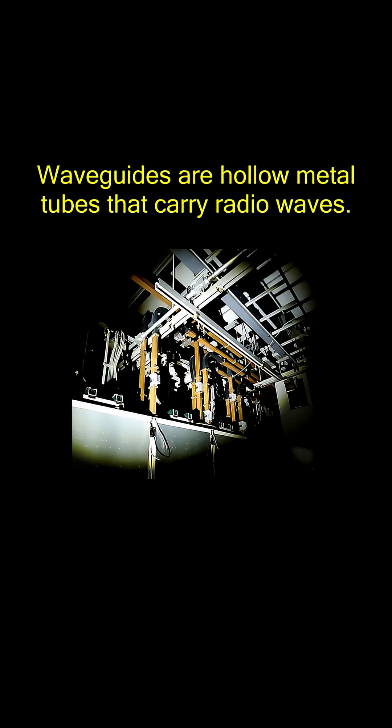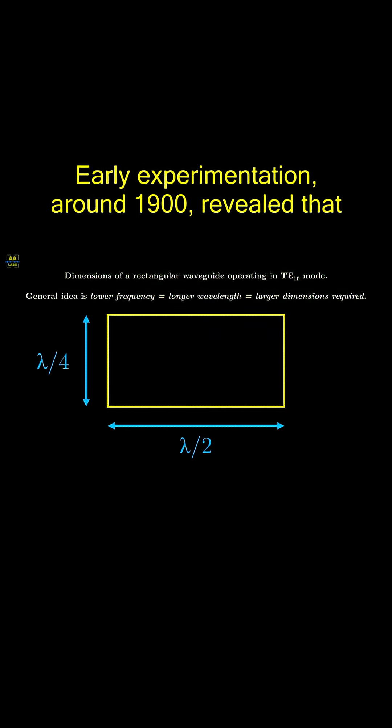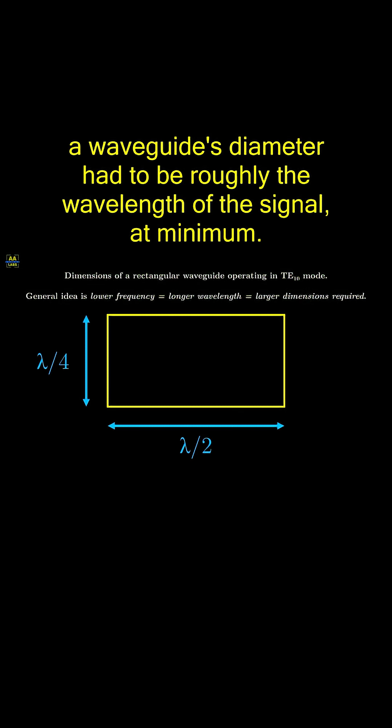Waveguides are hollow metal tubes that carry radio waves. Early experimentation around 1900 revealed that a waveguide's diameter had to be roughly the wavelength of the signal, at minimum.